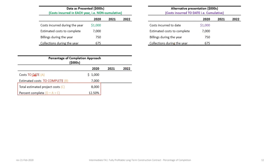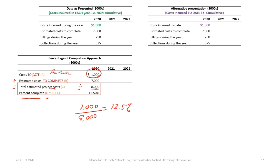Cost to date plus estimated cost to complete gives us total estimated project costs. The contract price is $10 million. In the first year, with $1 million incurred and $7 million remaining, total estimated project costs are $8 million. The percentage complete — labeled D — equals cost to date divided by estimated total costs: $1M ÷ $8M = 12.5% complete. So in the first year of our three-year contract, we are 12.5% complete.